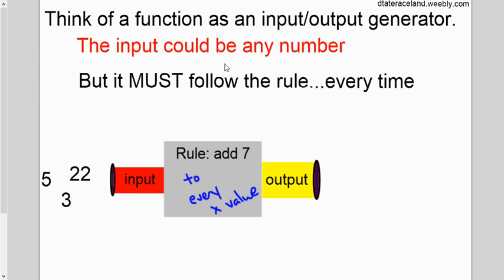Now, let's take a look at this idea of the function as an input-output generator. You could input any number, and then it has to follow the rule every time. For our function notation, we had it set up as an equation. Today, I don't have it set up as an equation because I just want you to see what the rule is. And here, in the middle of this generator machine that I've built here, it says rule, add 7 to every x value.